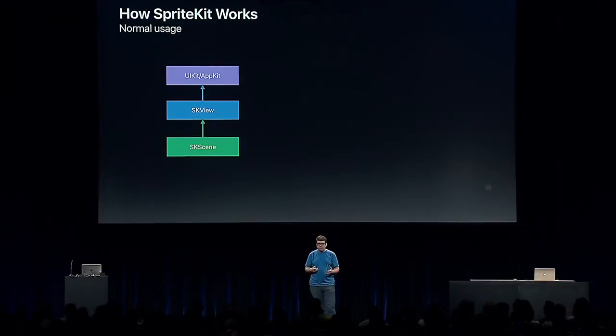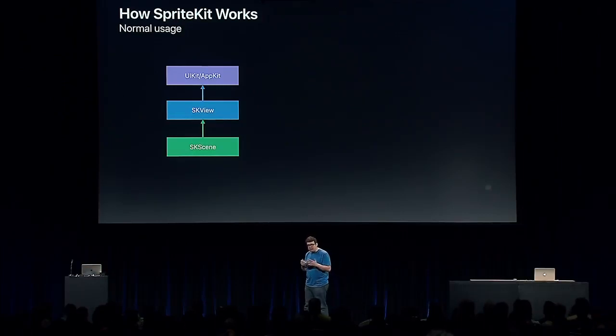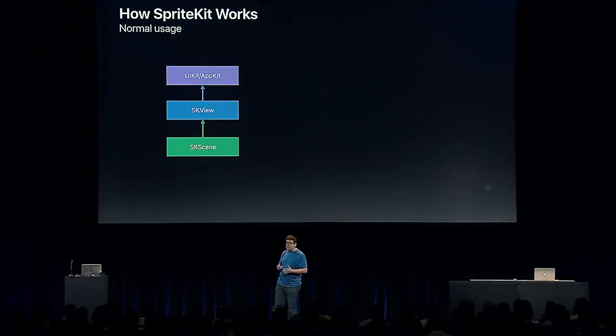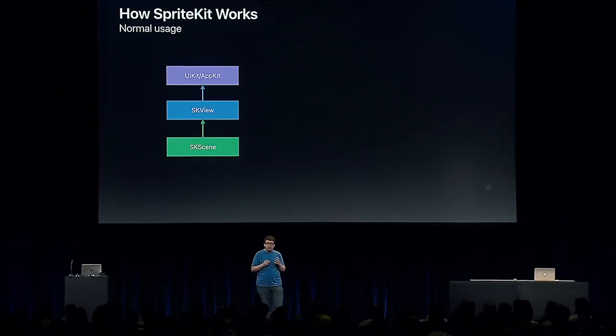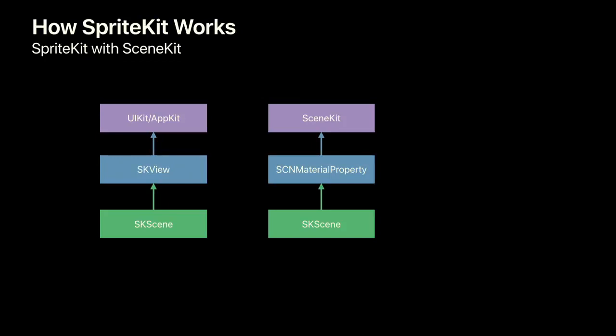Let's talk about how SpriteKit works under the hood. With normal SpriteKit rendering, you set your scene on an SKView, which works with UIKit or AppKit to get content on screen. SKView handles all the updating and rendering for you, which makes it easy to get started. But what if you want more control — updating with exact fixed time steps, updating without rendering, rendering without updating, or rendering once and updating twice from different viewpoints? What if we want to work directly with Metal?